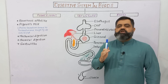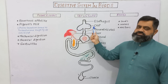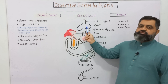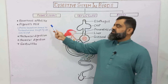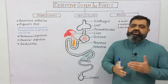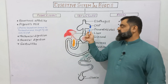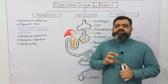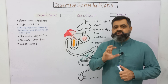The crop is the first part of the digestive system and can store a large amount of food, because birds have a ravenous appetite and try to eat the maximum amount of food. The crop secretes some enzymes which soften the food, and it functions as a storage organ.